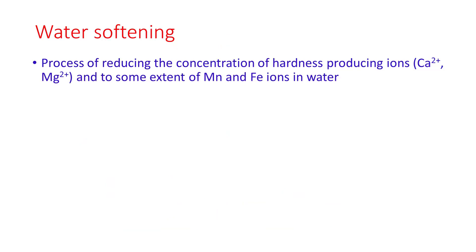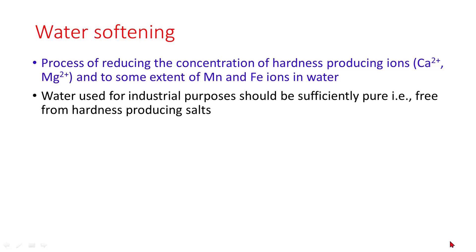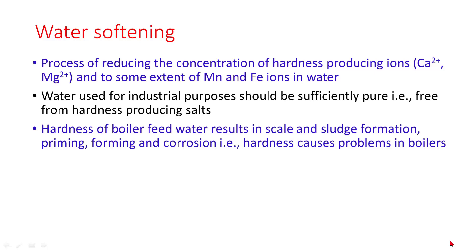Water softening is a process of reducing the concentration of calcium and magnesium ions, and to some extent of manganese and iron ions in water. Water used for industrial purposes should be sufficiently pure, that is free from calcium and magnesium salts. Hardness of boiler feed water results in scale and sludge formation, priming, forming, and corrosions. That means hardness causes problems in boilers.